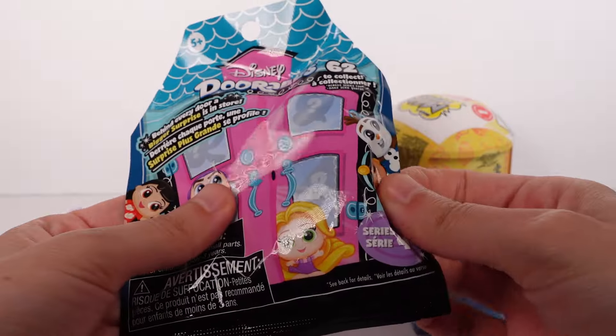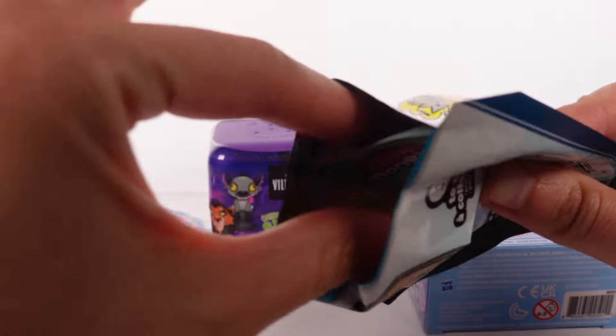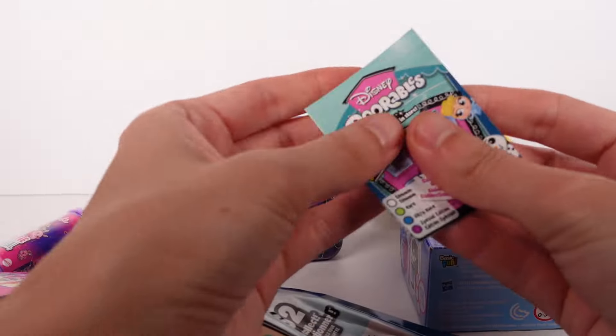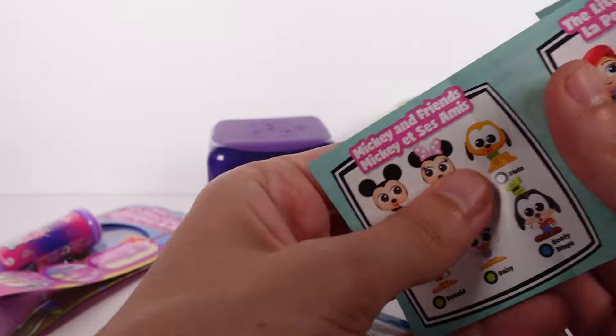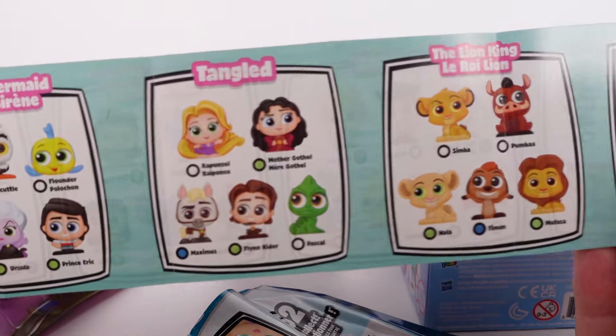Let's go ahead and see what we got inside each box. Let's go ahead and start with the Disney Adorable series four, see which friend or friends we will get.